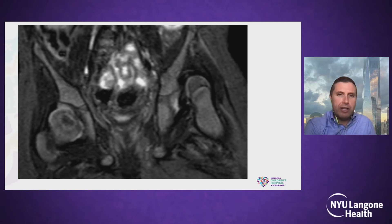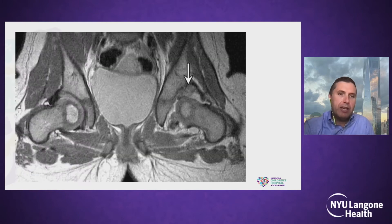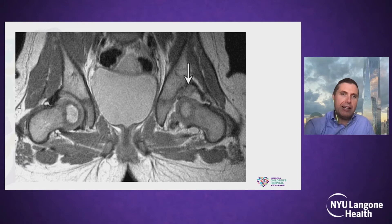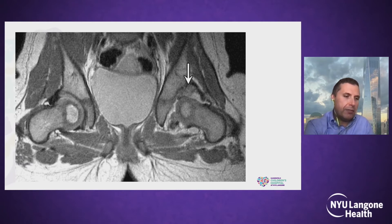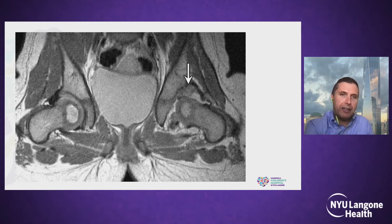This dislocated hip came back with a report from radiology that said there was a complete absence of the labrum, and after we did a closed reduction, they read this as labral hypertrophy and a discrete labral tear in the same patient. They first said there was no labrum, then they said it was hypertrophied and had a discrete tear.